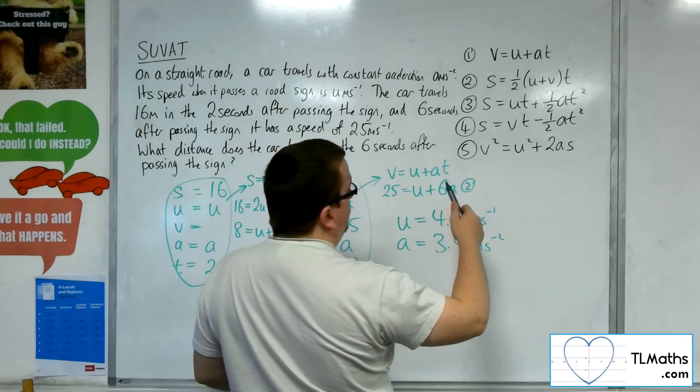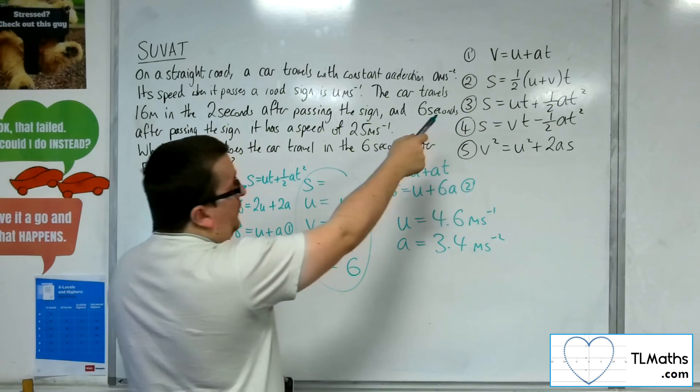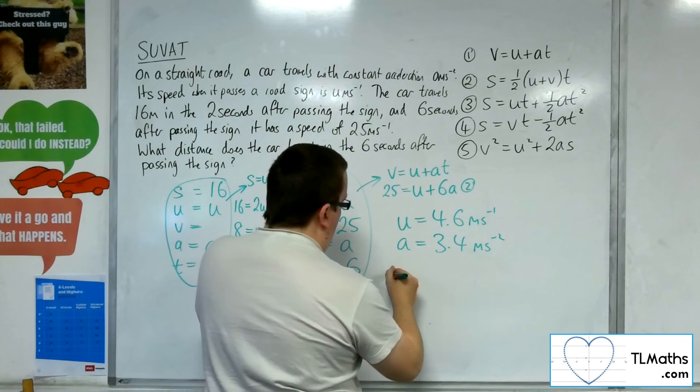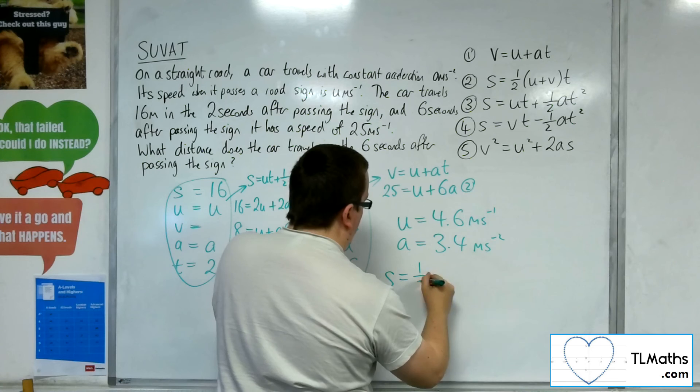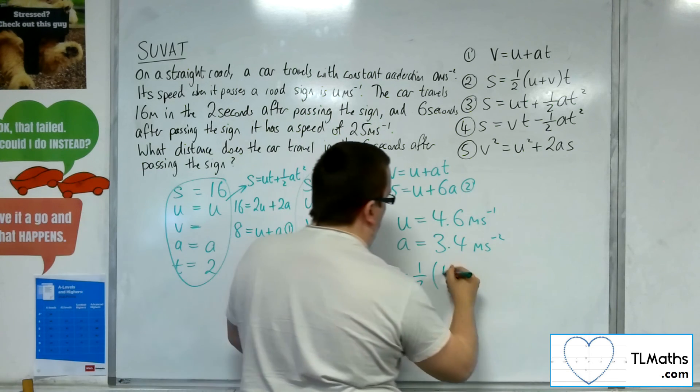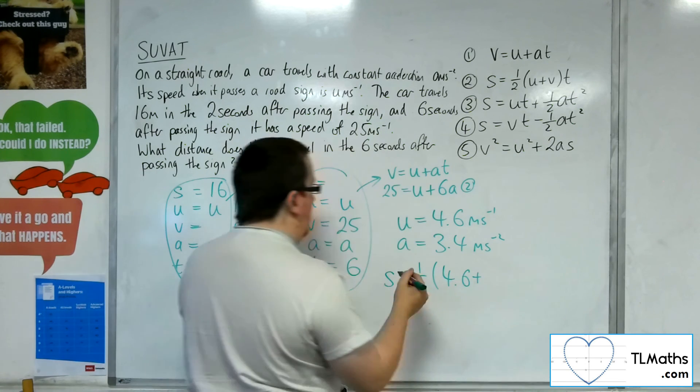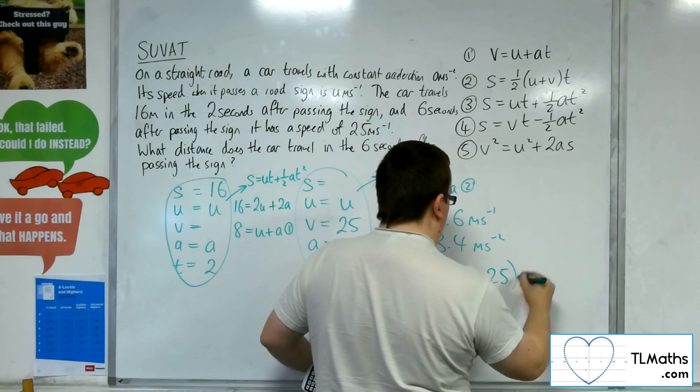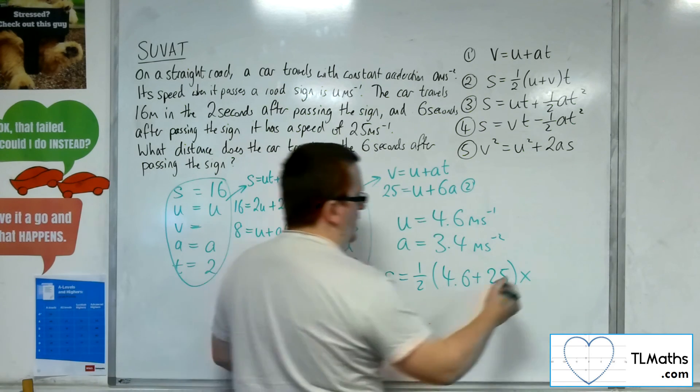So I could really use any of them. I'm going to use number 2. So s is equal to one half times u, 4.6, plus v, which is 25, times t, which is 6.